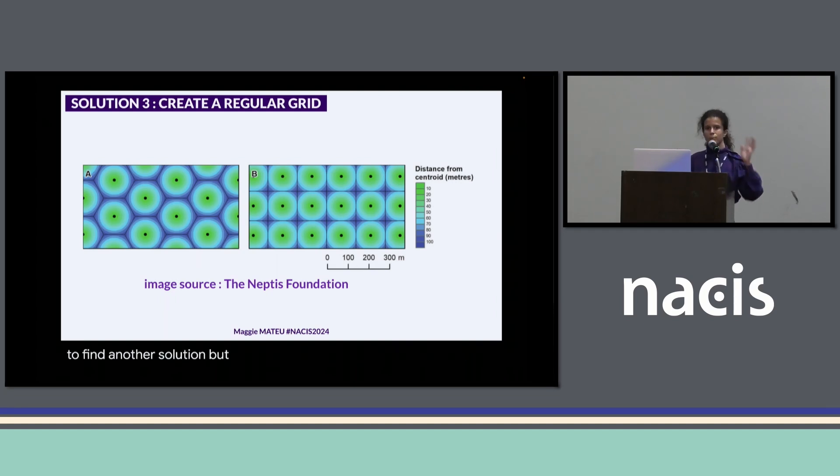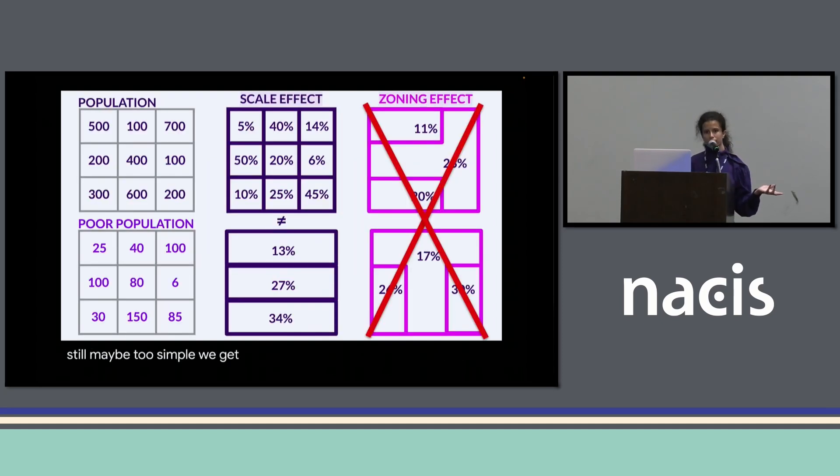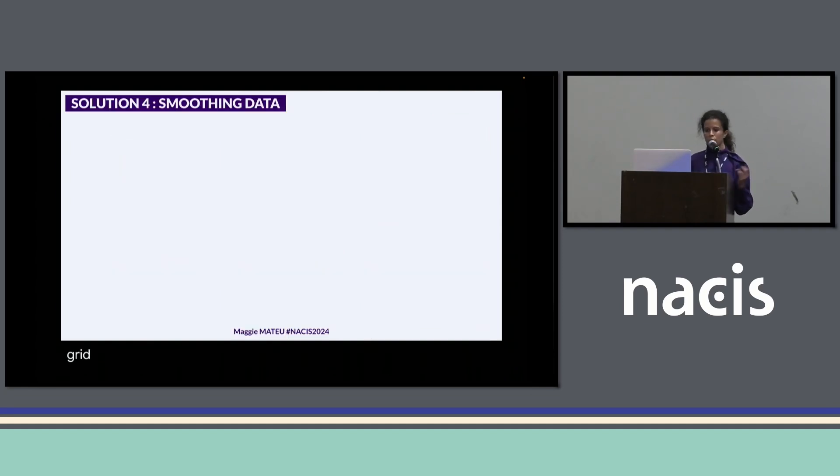With that intermediate solution that still may be too simple, we get rid of the zoning effect having a regular grid. So my final solution would be to smooth the data. It's the solution that lowers the zoning effect as much as the scaling effect.